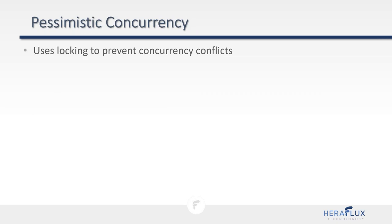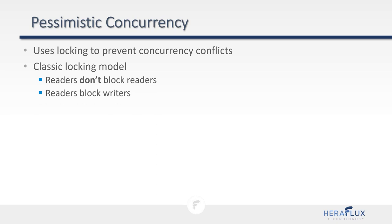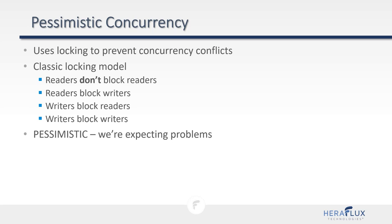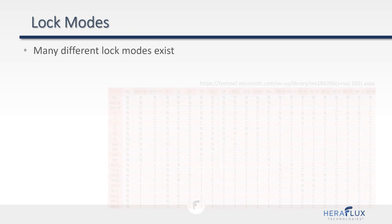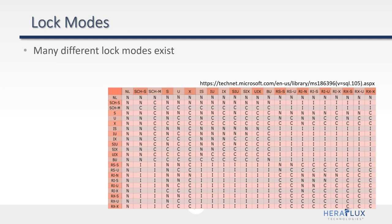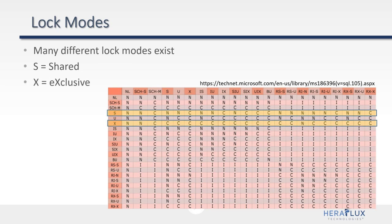With pessimistic concurrency, we use locking because we expect conflict. Readers do not block readers. But readers block writers, writers block readers, and writers block each other — writers blocking writers will always occur unless using in-memory OLTP. SQL Server has many lock types. We'll focus on two: shared (S-lock) for reads and exclusive (X-lock) for writes. Locking works as a hierarchy: database, table, page, and row. A read query takes a shared lock on the database, intent shared locks at table and page level, and a shared lock at the row level.